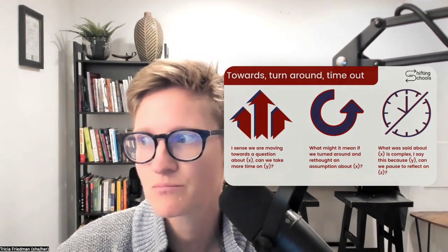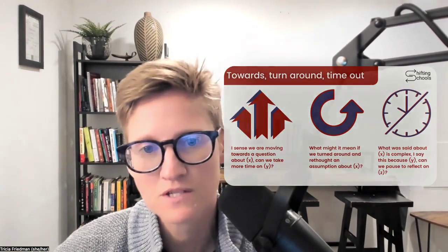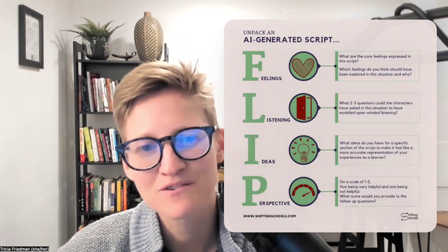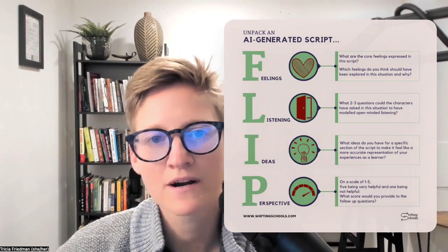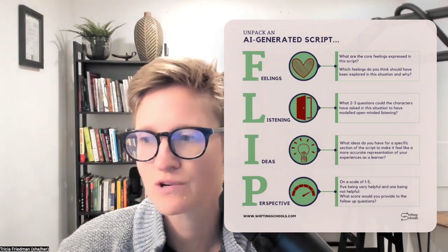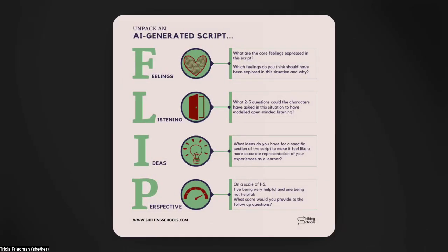The other resource is one that I've developed for younger learners, but I still find it to be pretty helpful with this specific scenario. That is our Flip the Script resource, where if you're using a generative AI tool to create a script, it's again on the other end — the critical review, the critical analysis of that resource. With a menu like this one, I would be inviting students or adult learners to take the time to talk about the core feelings that were expressed in that dynamic.